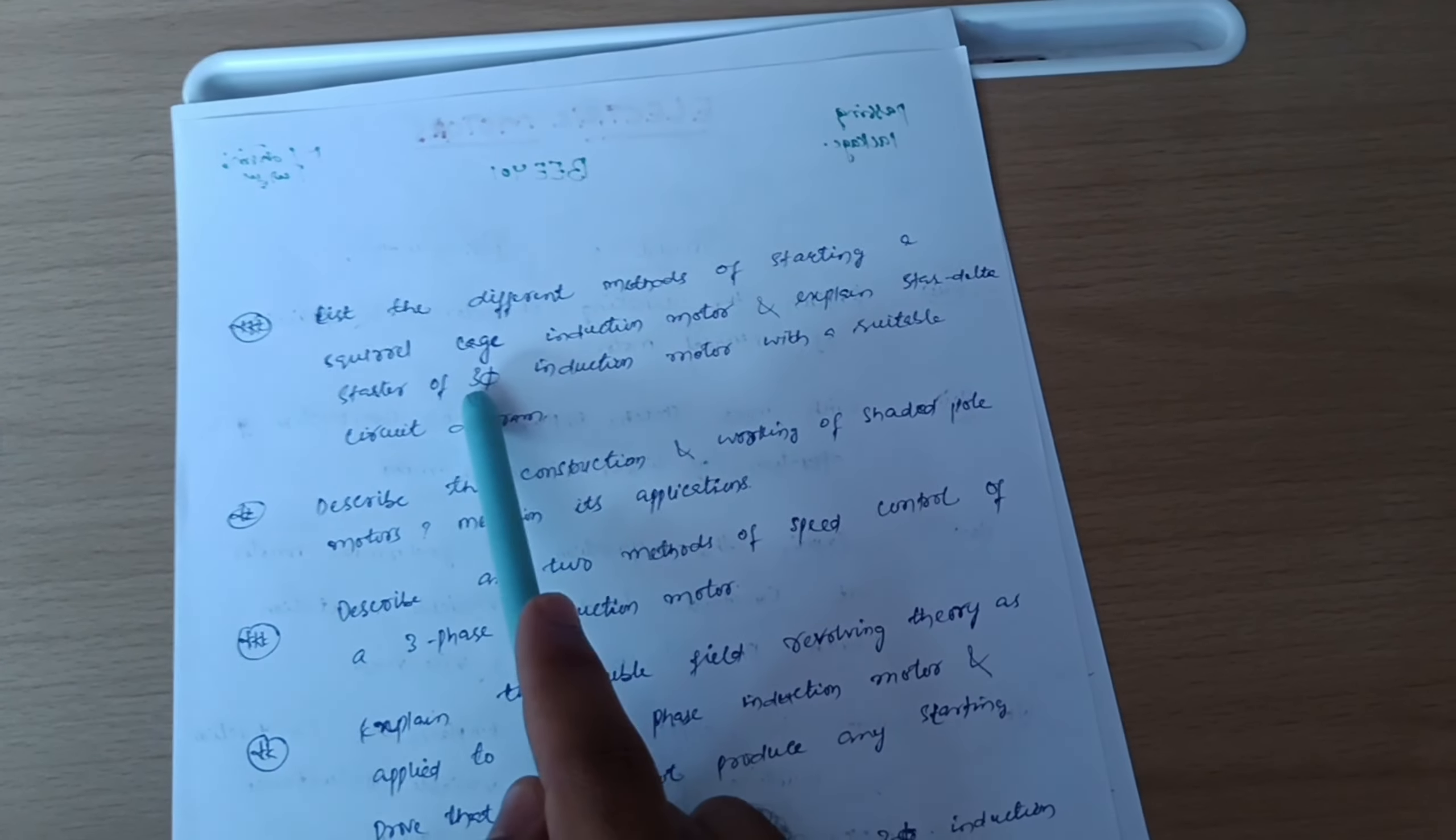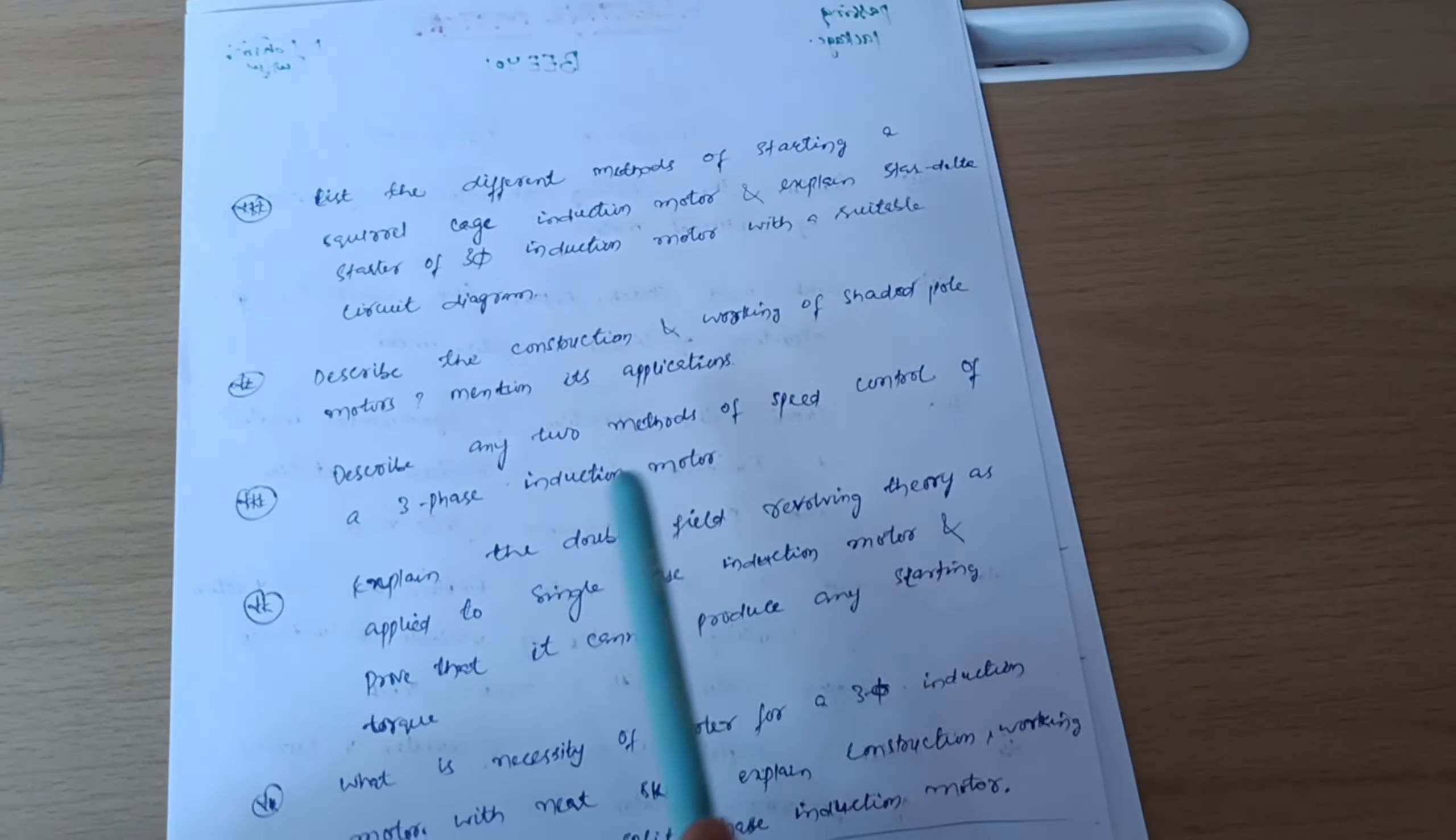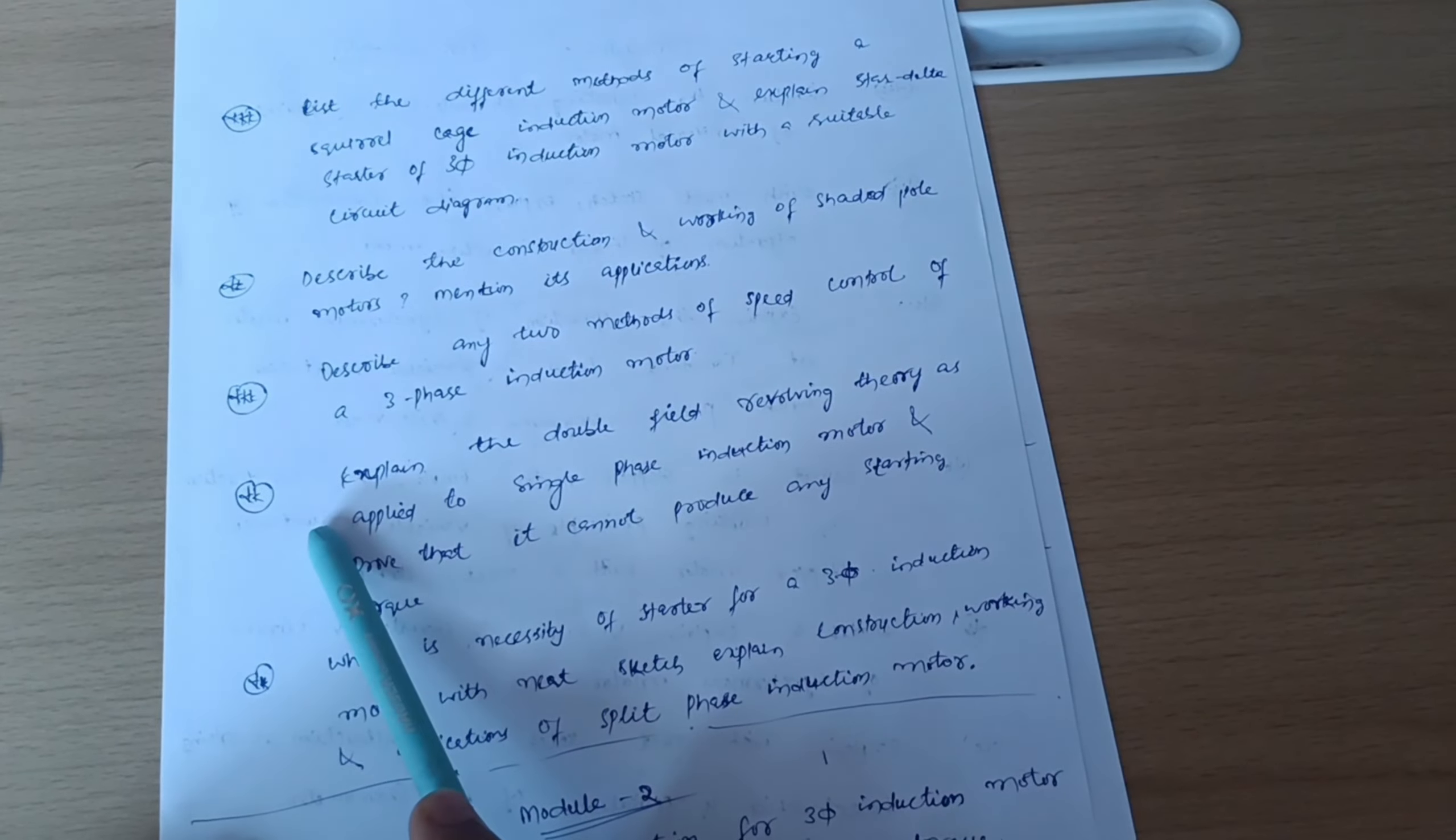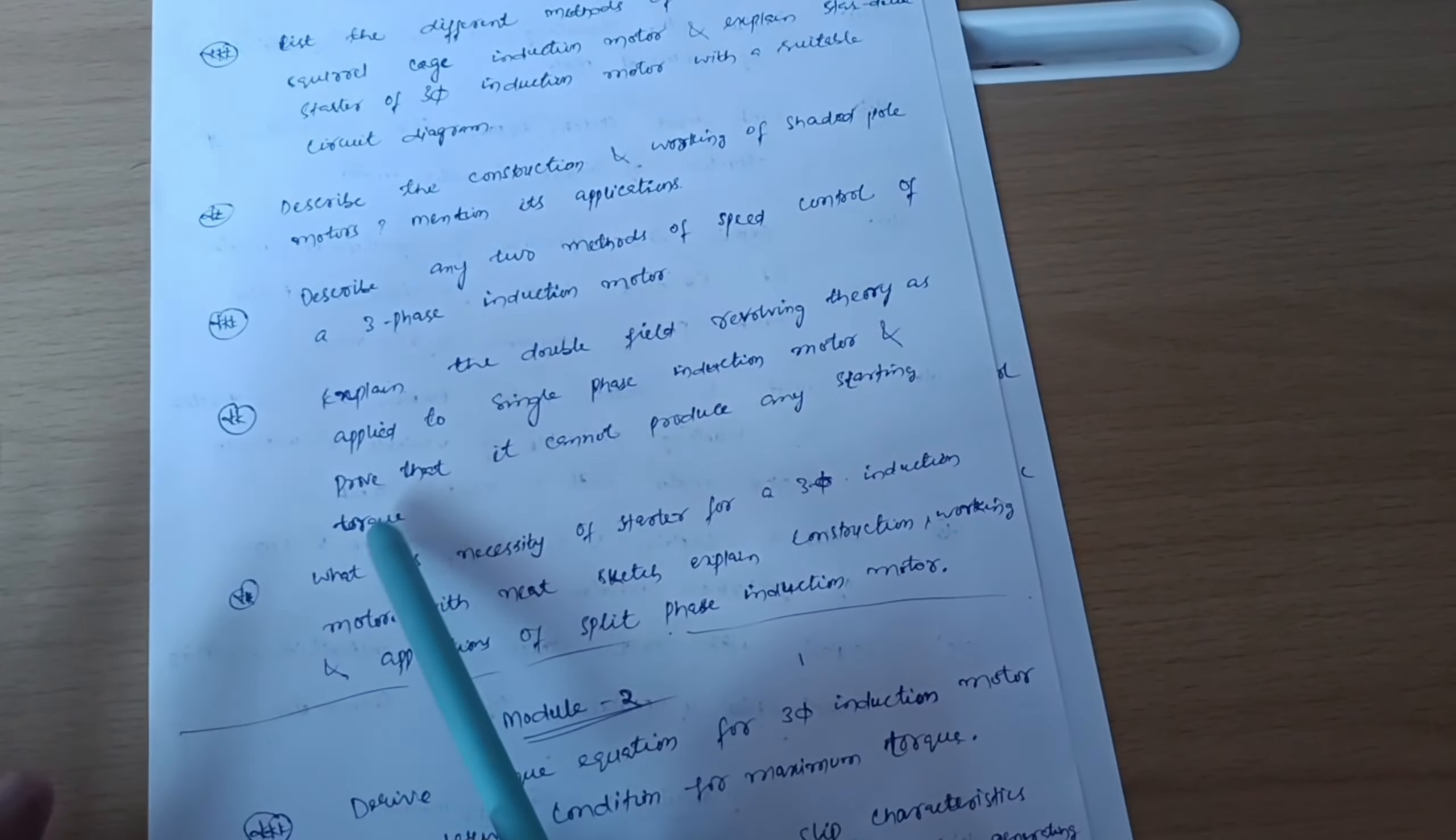List the different methods of starting squirrel cage induction motor and explain star delta starter of three phase induction motor with suitable circuit diagram. Describe the construction and working of shaded pole motors, mention its applications. Describe any two methods of speed control of three phase induction motor. Explain the double field revolving theory as applied to single phase induction motor and prove that it cannot produce any starting torque - this is super important question from Module 4.